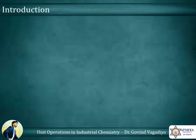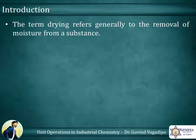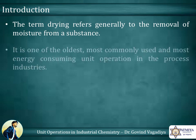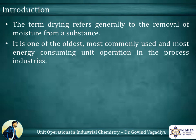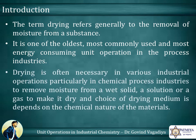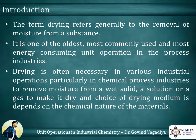The term drying refers generally to the removal of moisture from a substance. It is one of the oldest, most commonly used and most energy-consuming unit operations in the process industries. Drying is often necessary in various industrial operations, particularly in chemical process industries, to remove moisture from a wet solid, a solution, or a gas to make it dry. The choice of drying medium depends on the chemical nature of the materials.